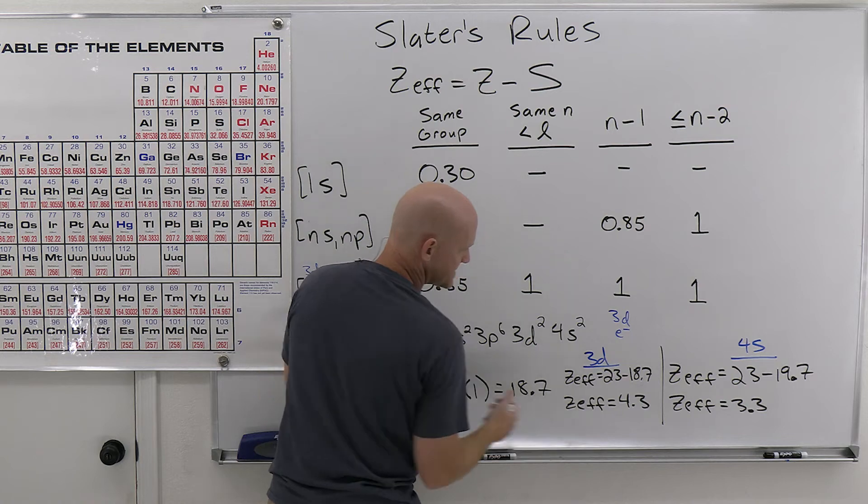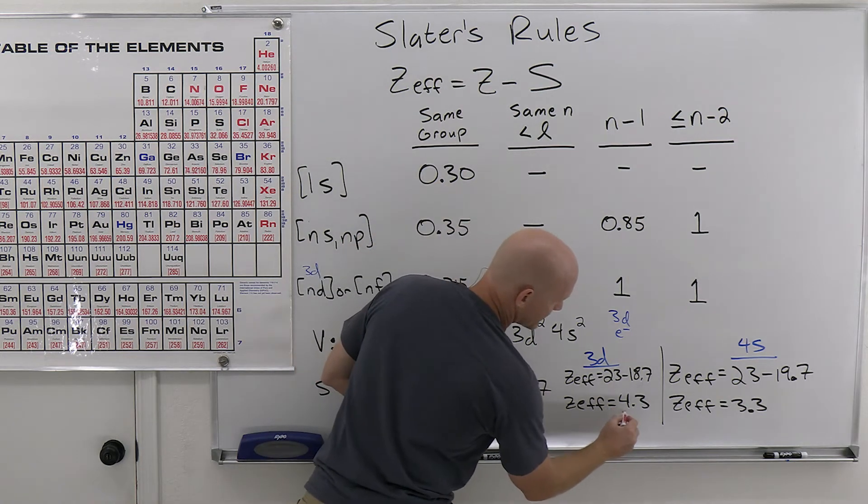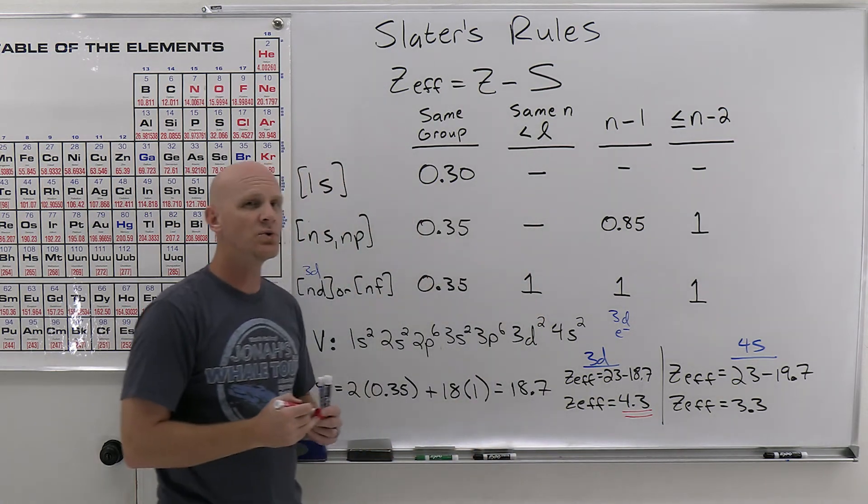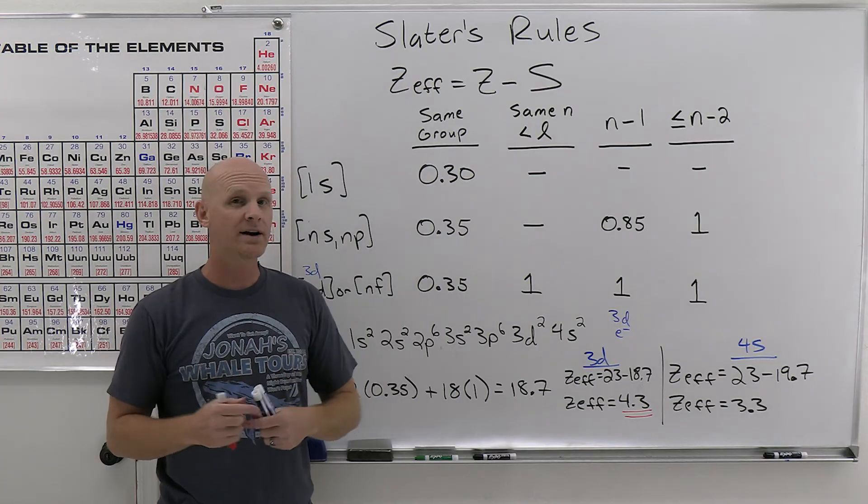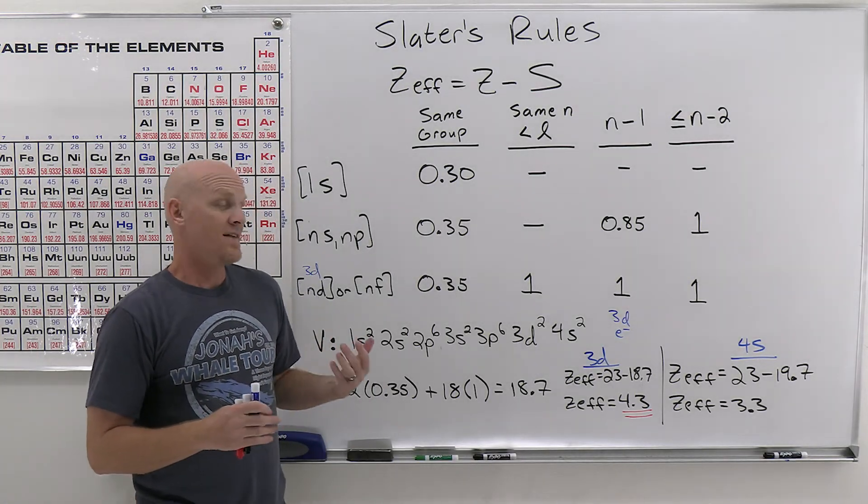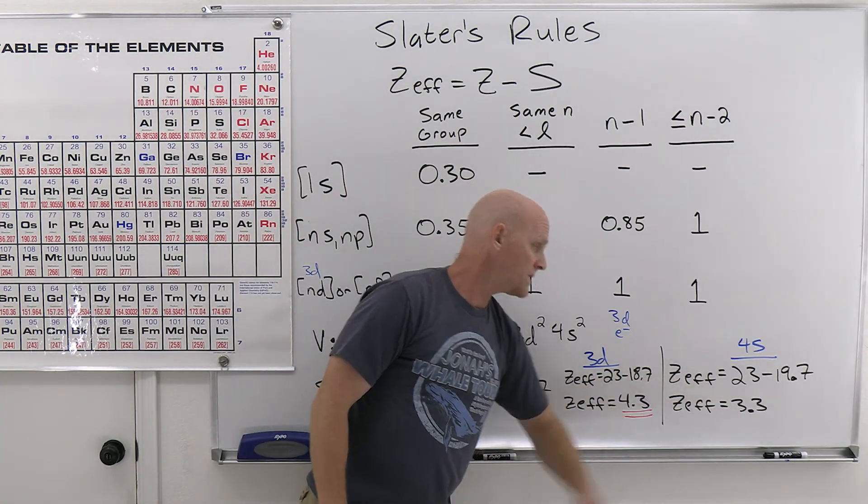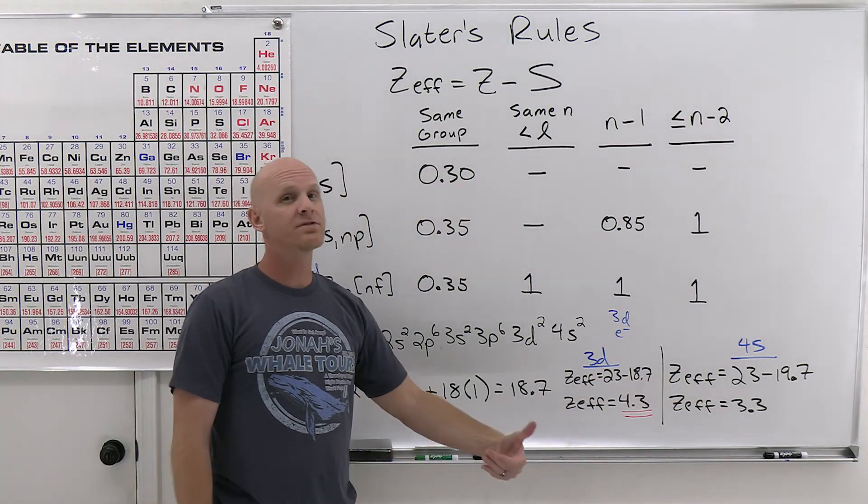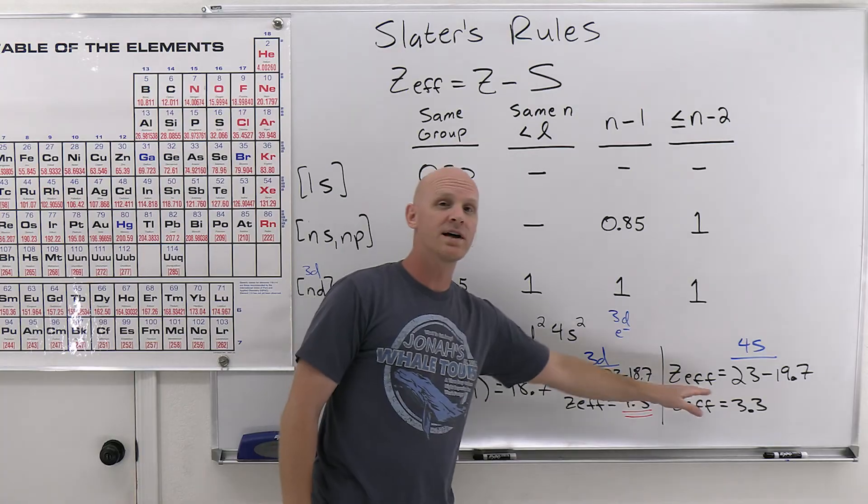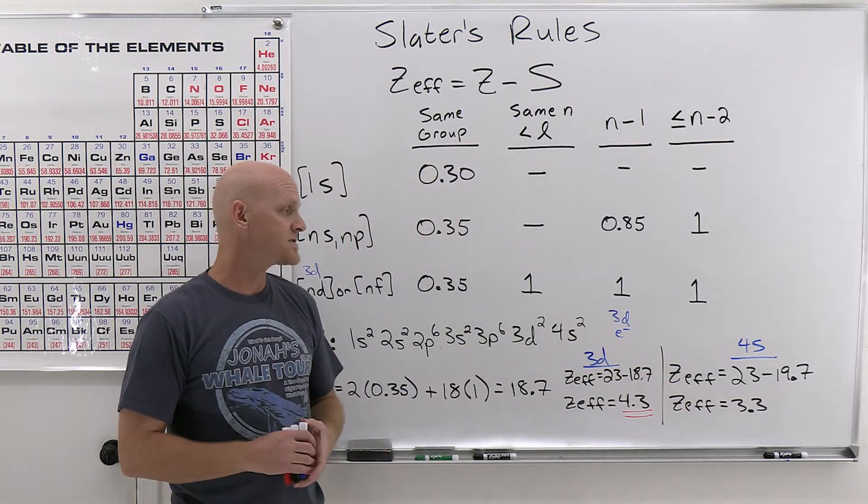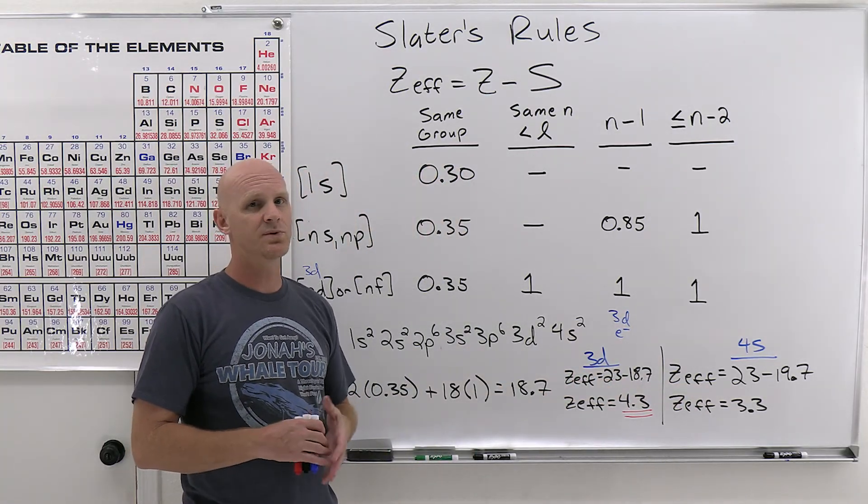And so this was for a 3d electron. This was for a 4s electron, and we can now see the difference here with that effective nuclear charge. And so we can see that the 3d electron actually has a higher effective nuclear charge. It's more attracted to the nucleus, and therefore it should be harder to remove. Indeed, we typically remove again a 4s before a 3d electron, and that's consistent with now what we're finding with this calculation of effective nuclear charge using Slater's rules.